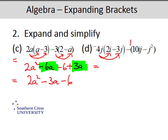So negative 4j times 2i. So negative 4 times 2 is negative 8ij. Negative times negatives are positive. 4 times 3 is 12. And j times j is j squared.